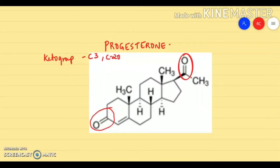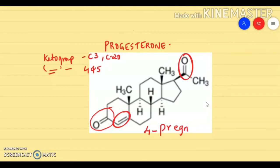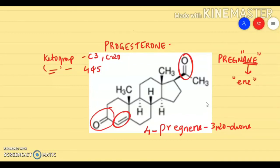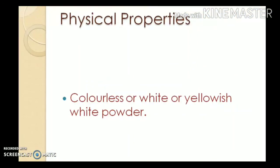The second structural feature is the unsaturation — it contains a double bond in ring A at the fourth carbon atom, that is between C4 and C5. The IUPAC name for progesterone is 4-pregnene-3,20-dione. The basic carbon skeleton is pregnane — an alkane — but since progesterone contains a double bond, it is an alkene, so the '-ane' of pregnane is replaced with '-ene'. '3,20-dione' refers to the two keto groups at positions three and twenty.